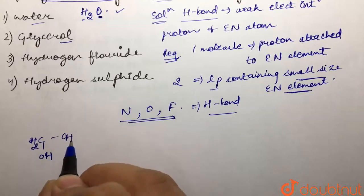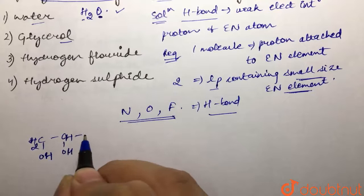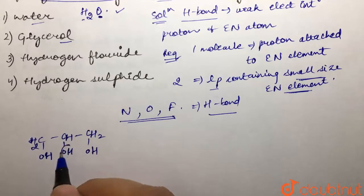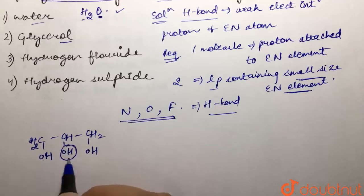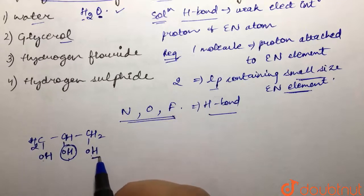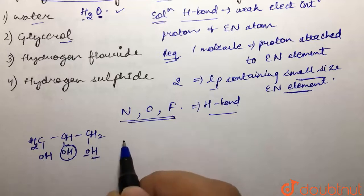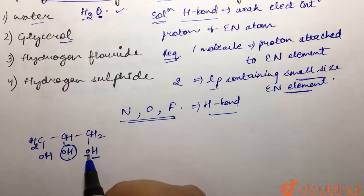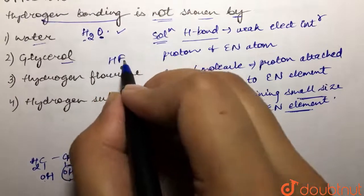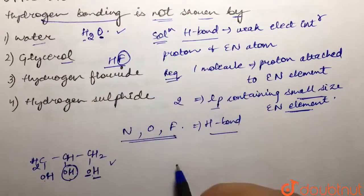Next, glycerol has the structure CH₂OH, CHOH, and CH₂OH. It has three OH groups. It shows hydrogen bonding because we have a proton on the OH group, and the second glycerol molecule has oxygen, so hydrogen bonding can occur between glycerol molecules. So glycerol does show hydrogen bonding.